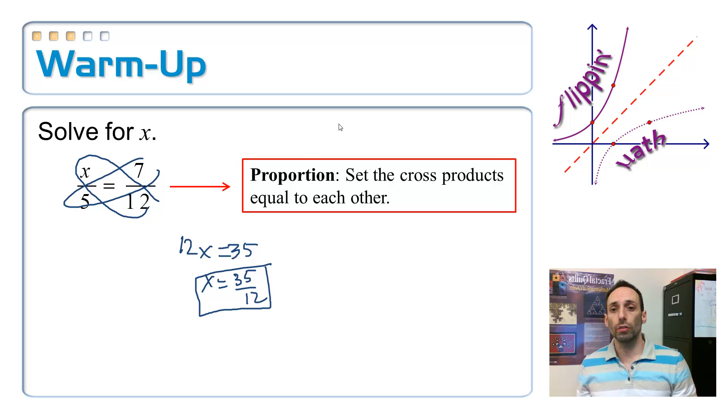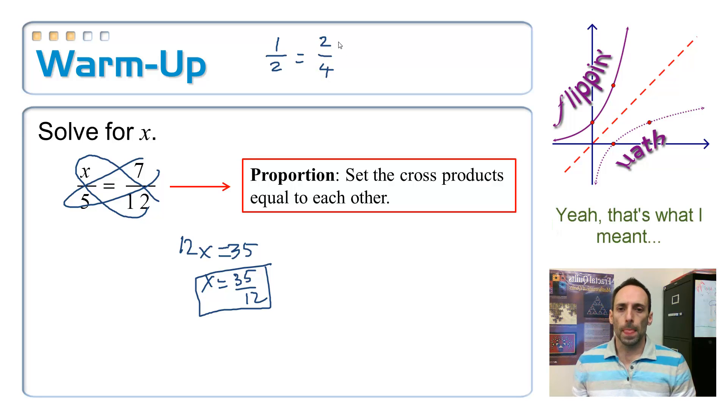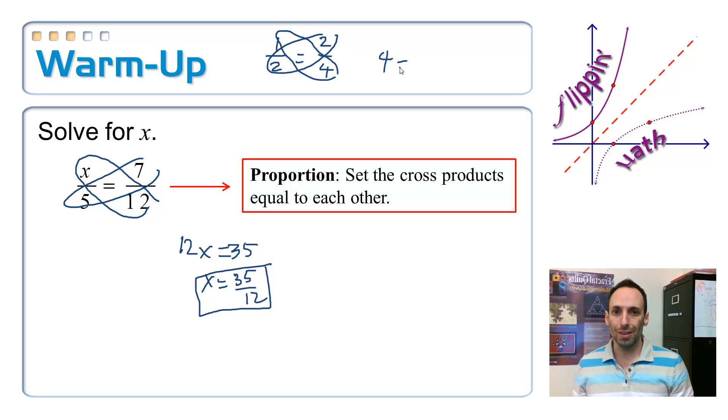The reason why this is true, it's very simple. If you were to give me any other fraction that is equal to 1 half, let's try 2 fourths. And if you were to cross multiply these, for this cross product I would get 4, and for the other cross product I'd also get 4. For any two equal ratios, equal fractions, the cross products will always be equal to each other. That's what proportion means, is that the ratios are equal.